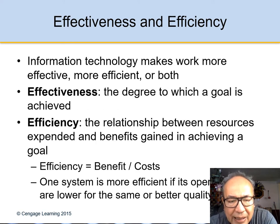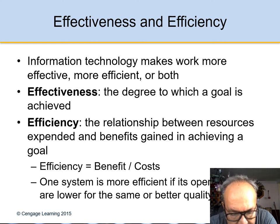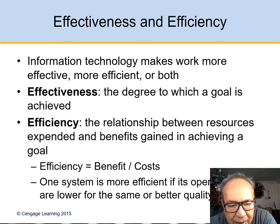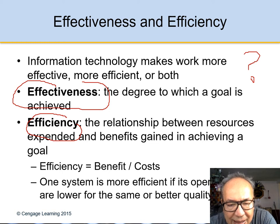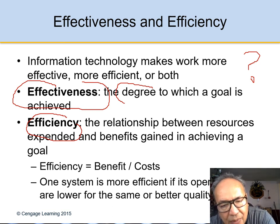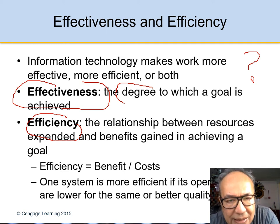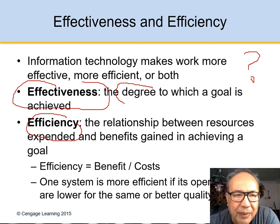We have two very important words here: effectiveness and efficiency. Effectiveness is the degree to which a goal is achieved — how much of the goal is achieved.